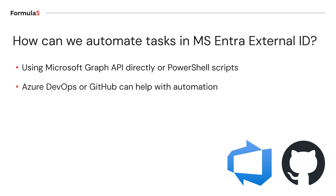When it comes to automation, Azure DevOps or GitHub tools can help. We can have those PowerShell scripts stored in a Git repository and then trigger a pipeline or GitHub Action to, for instance, create a customer application and register it in Microsoft Entra External ID. From the developer perspective, we also have a Visual Studio Code extension, which I will show you in this video. We can use this extension to create user flows in our Entra tenant or to register new applications.